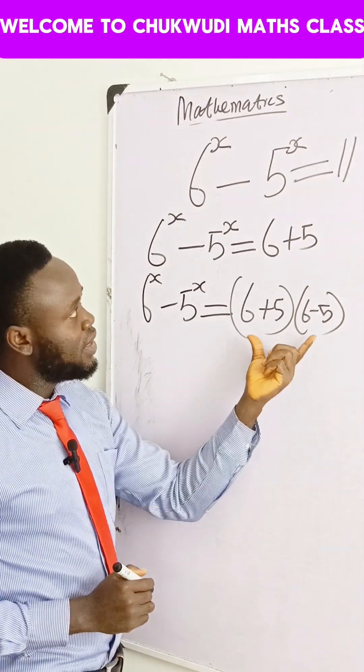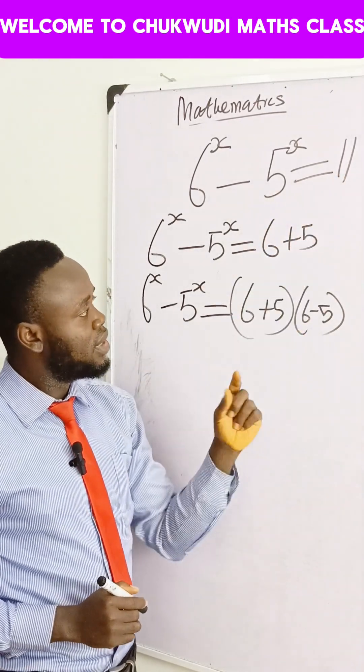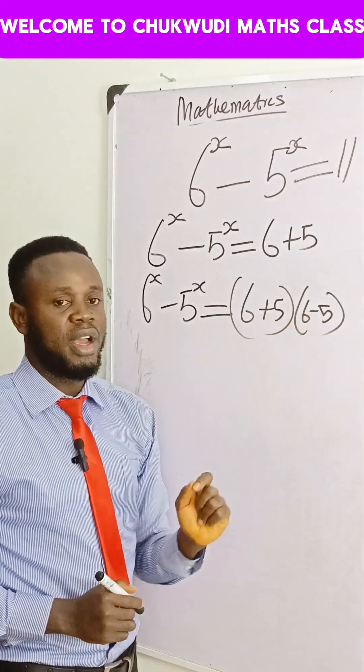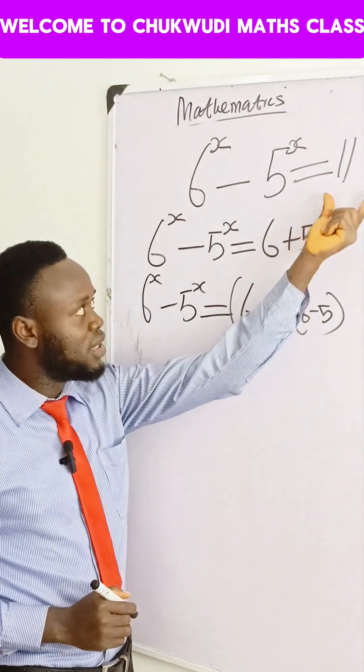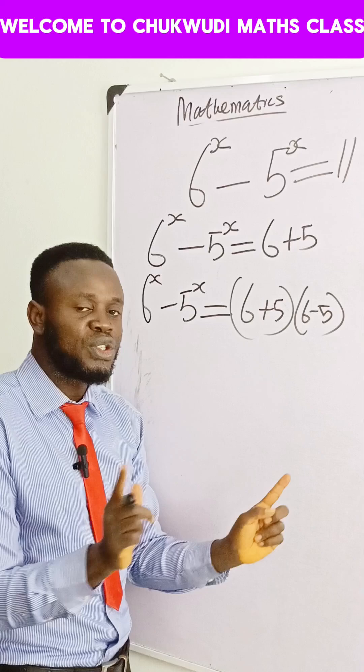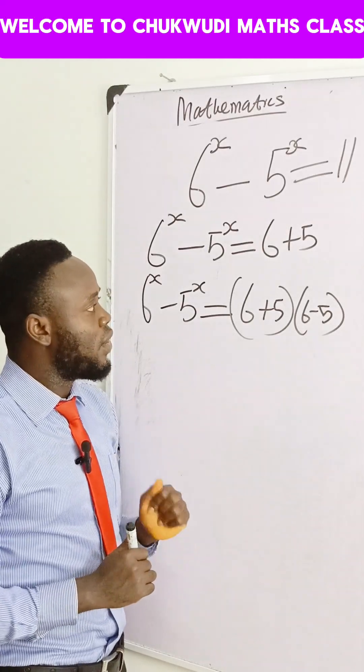Now let's check if this thing will give us 11. 6 plus 5 is 11. 6 minus 5 is 1. 1 times 11 will give us 11. So we have not altered anything here yet. Alright.